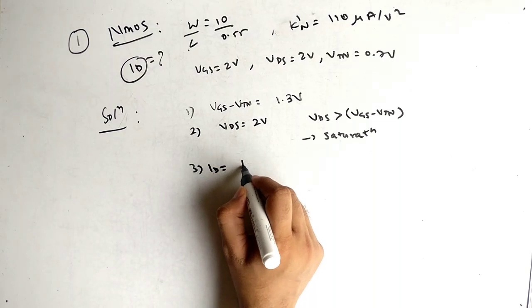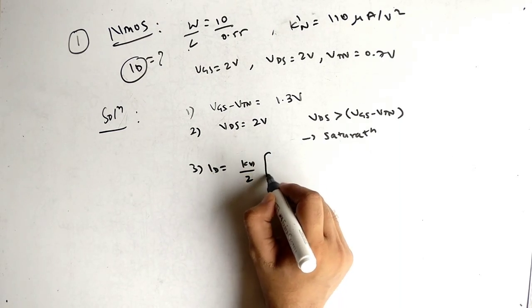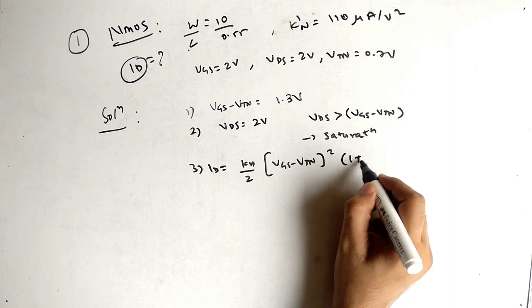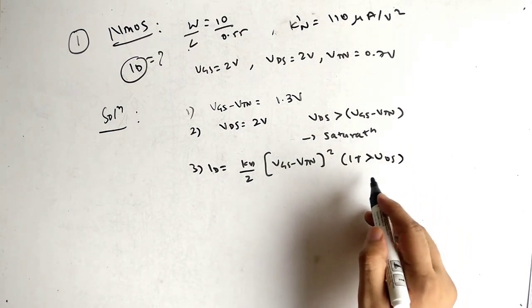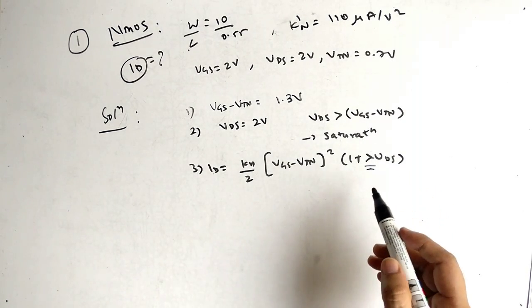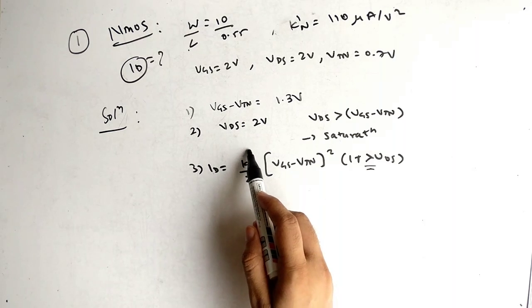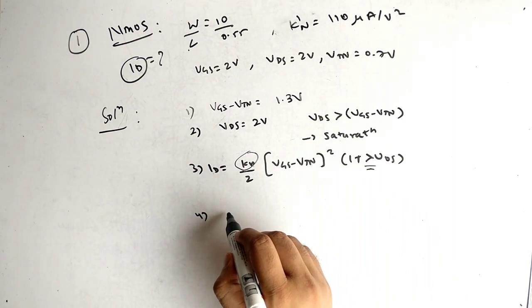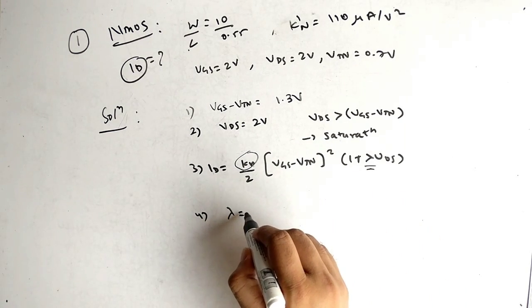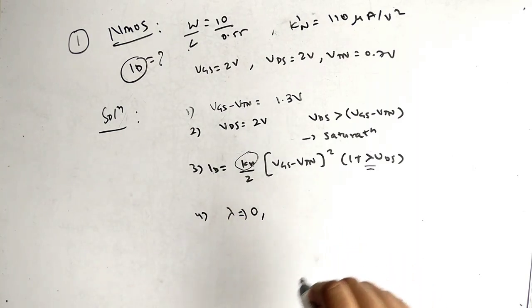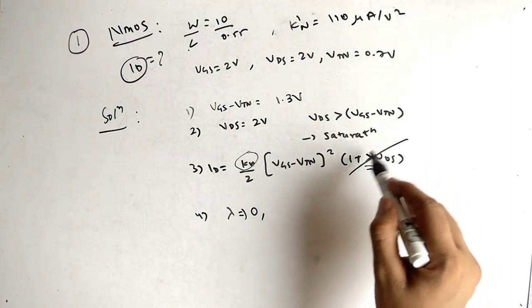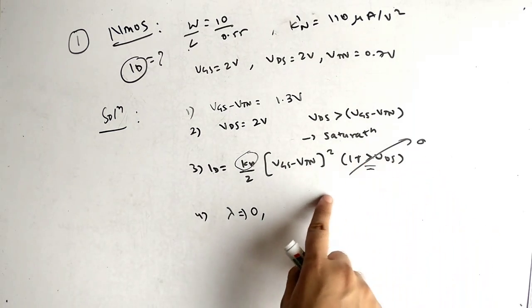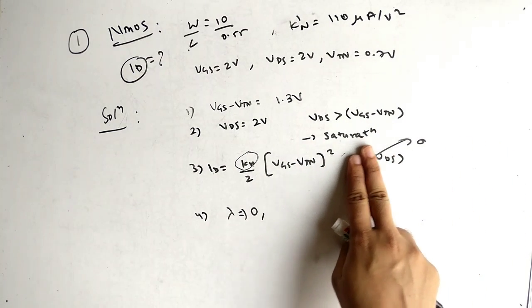Use the saturation formula: ID = (KN/2) × (VGS − VTN)² × (1 + λ·VDS). Since λ is not given, take λ = 0, so the term (1 + λ·VDS) becomes 1 and drops out.